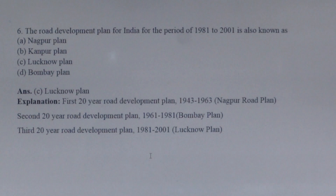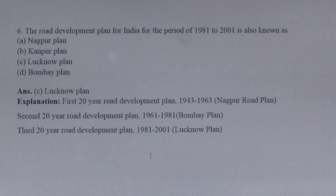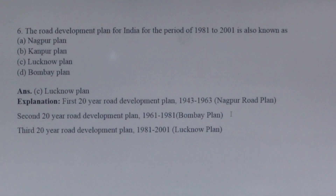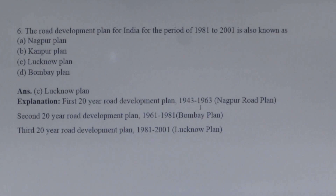Next question: The road development plan for India for the period 1981 to 2001 is also known as what? The Indian Road Congress classified road development plans into three periods. The first 20-year road development plan (1943–1963) is known as the Nagpur Road Plan. The second 20-year plan (1961–1981) is called the Bombay Plan. The third 20-year plan (1981–2001) is known as the Lucknow Plan.